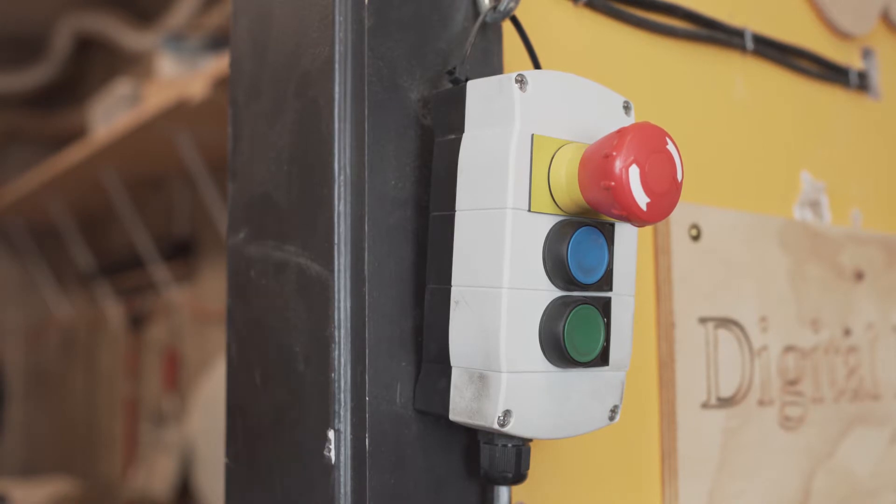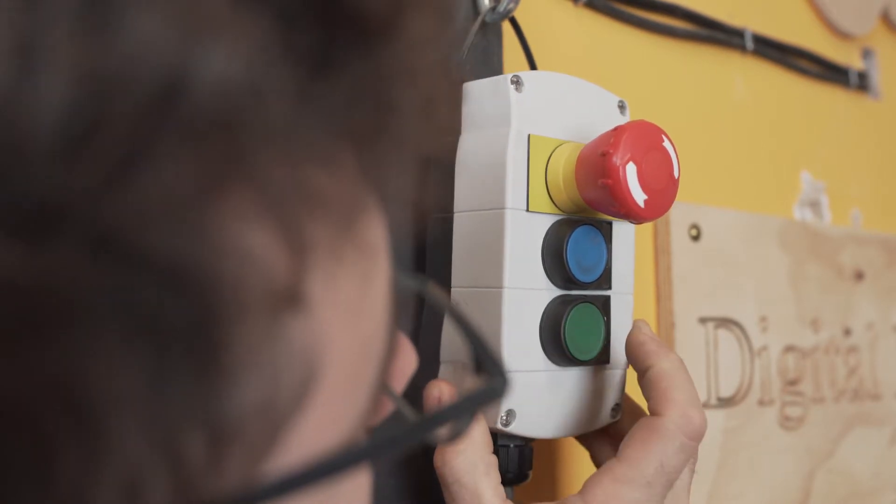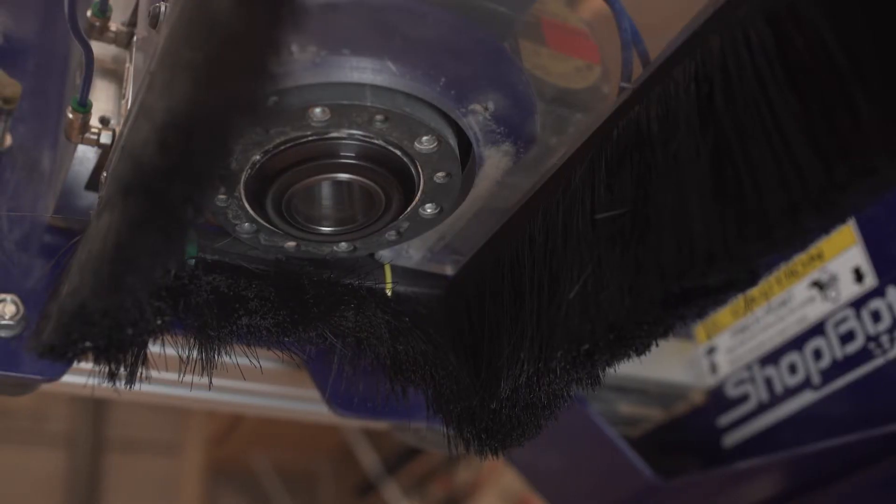To start the spindle, press the green button on the e-stop pendant. Look for the spindle to start after pressing the green button.